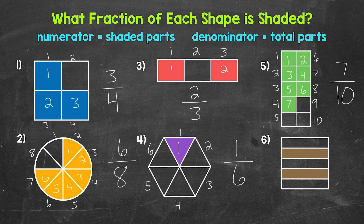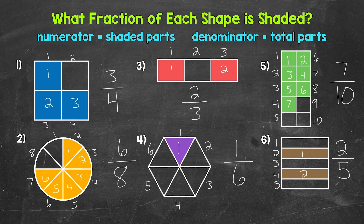And then lastly, for number six, let's see how many total equal parts our whole has been divided into. We have one, two, three, four, five. So five is our denominator. Now for the numerator — how many equal parts are shaded? One, two. So two is our numerator. Two out of five parts are shaded. Our fraction is two over five, which we say two fifths.